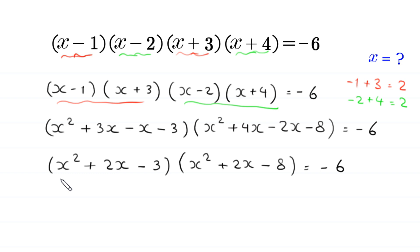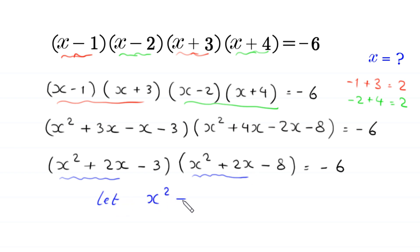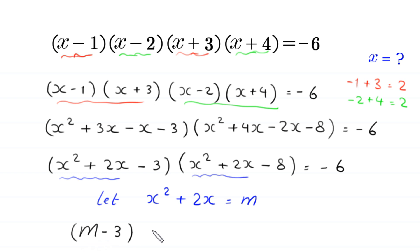Now, here we have the same expression x squared plus 2x, and here again x squared plus 2x. So we let x squared plus 2x equal to m. When we substitute m into this equation, then this equation will become m minus 3 times m minus 8 is equal to negative 6.